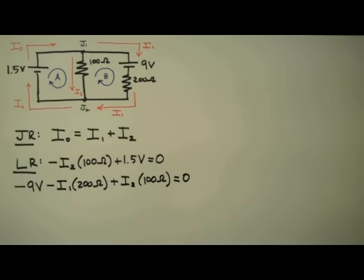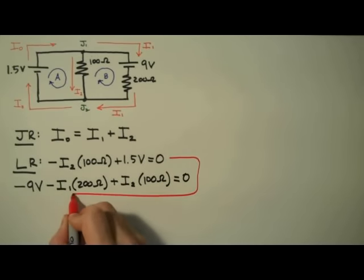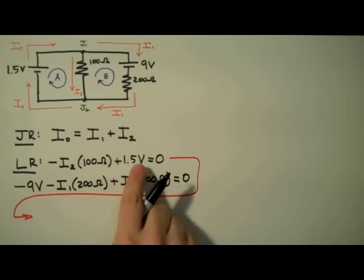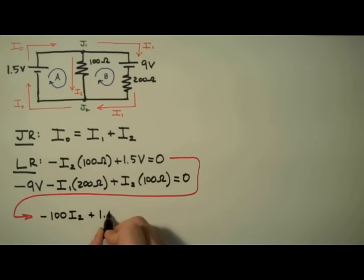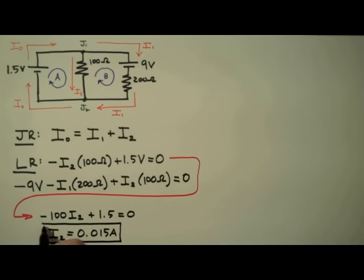At this point, the physics of determining the current in this problem is done. All that's left is some algebra. We have three equations, three unknowns — we can solve this. I'm going to start with the middle equation and solve for I2. I'm going to do something a little unorthodox for physicists: I'm going to drop the units. This is pretty much the only time I ever do this, but when using Kirchhoff's rules it makes the equations much easier to handle, especially when they get really hairy. I2 is equal to 0.015 amps, or 15 milliamps.